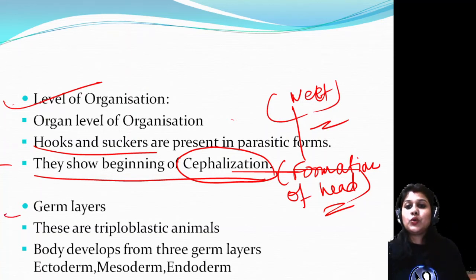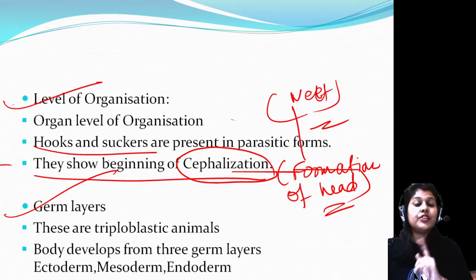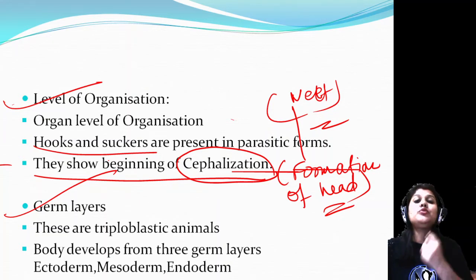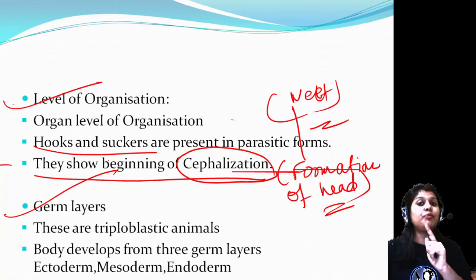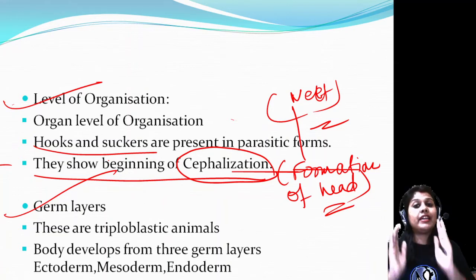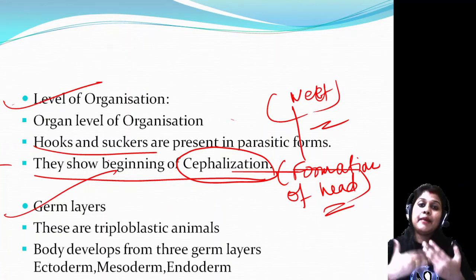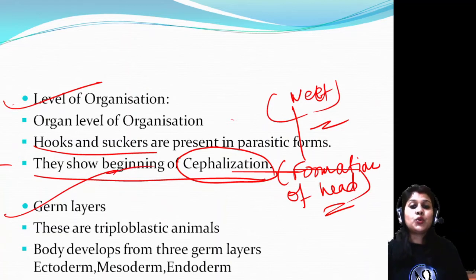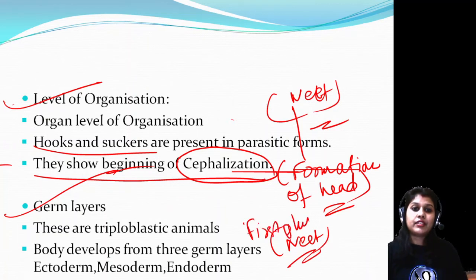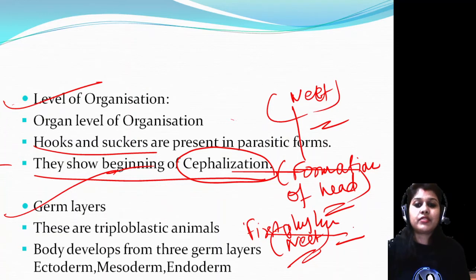Now, germ layers. In cnidarians, they were diploblastic - formed from two germ layers: ectoderm and endoderm. But in Platyhelminthes, they are triploblastic animals, meaning they have three layers - ectoderm, mesoderm, and endoderm. One mesoderm layer is added. So this is the first phylum where three germ layers are seen: ecto, meso, and endo.